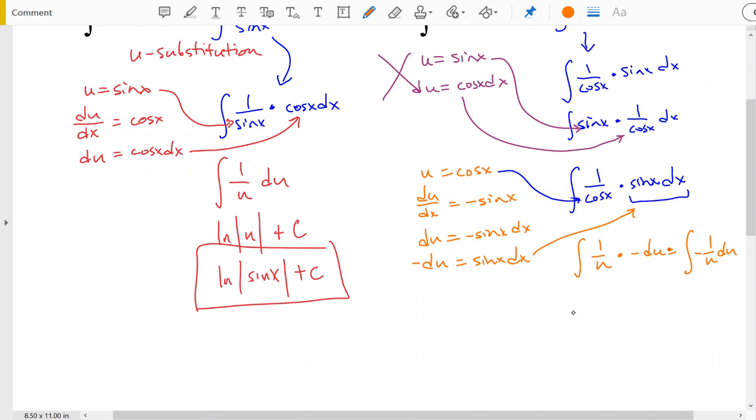So this becomes negative natural log of the absolute value of u plus c. And substituting back in for u, this time u is cosine of x. So negative natural log the absolute value of cosine of x plus c.